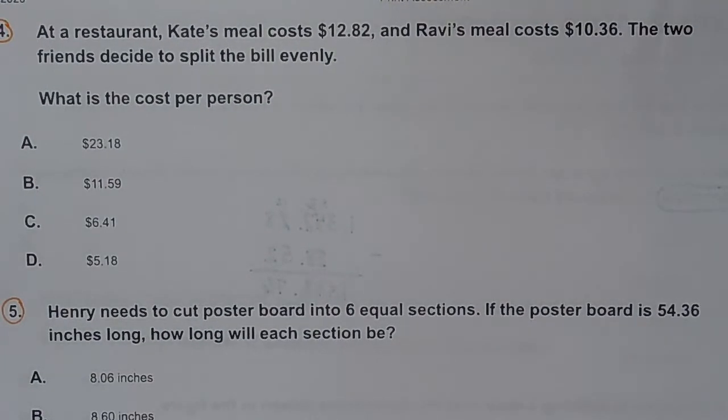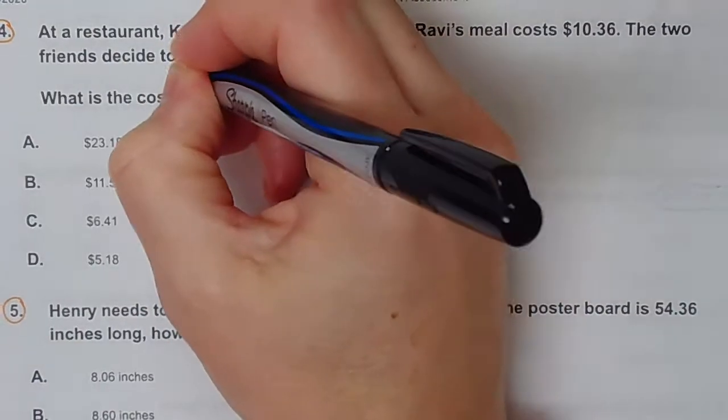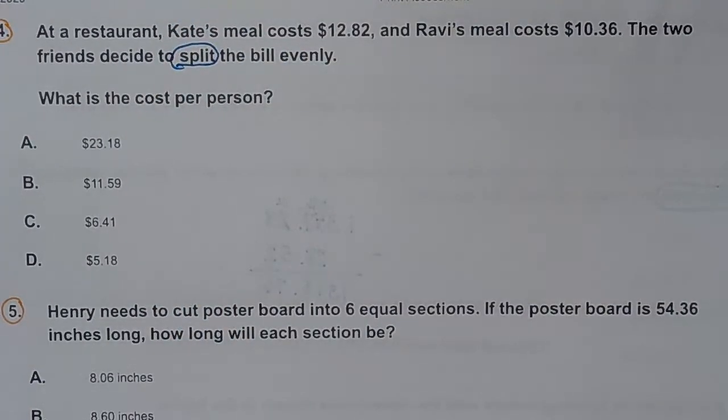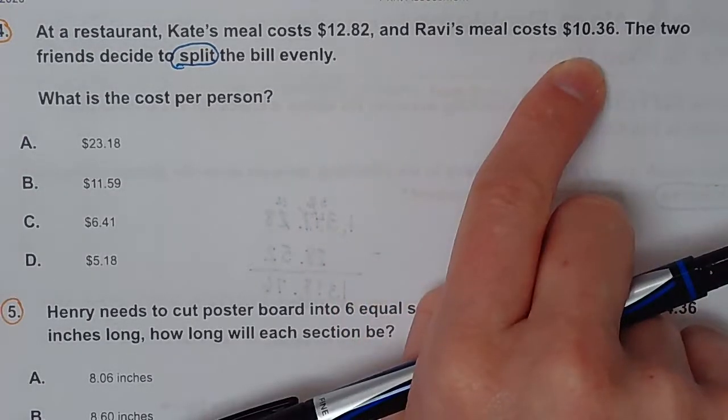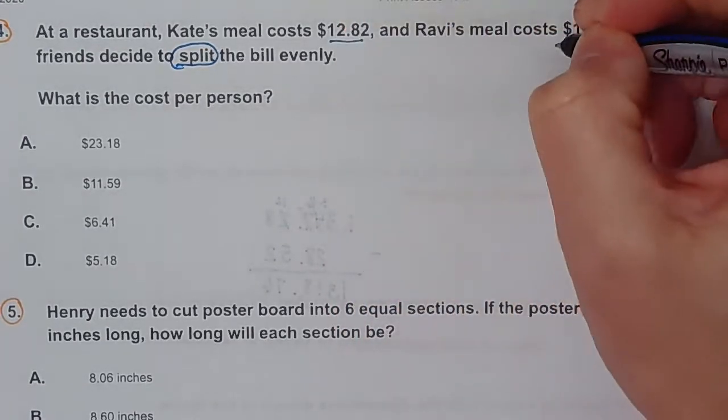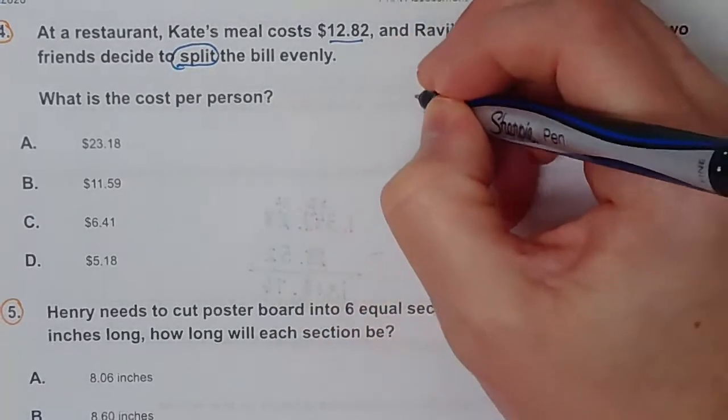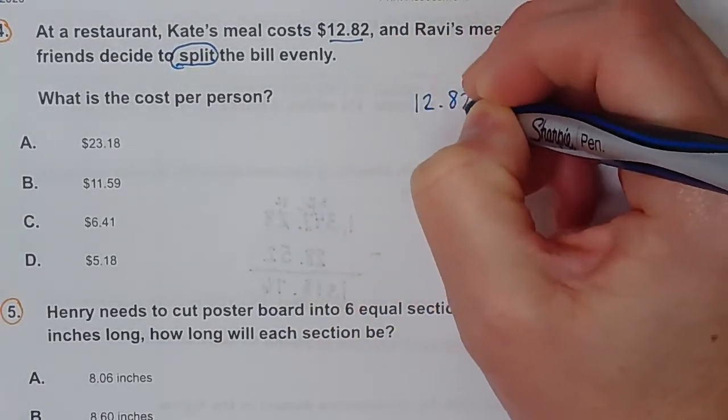At a restaurant, Kate's meal cost $12.82, Robbie's meal cost $10.36. The two friends decided to split the bill evenly. What is the cost per person? This is a two-step problem. When it says they split the bill, that's always going to mean they're dividing it. Obviously there's two people, so we're dividing by two. But first we got to figure out how much is the bill. I got to add these two together to figure out what the total cost was.